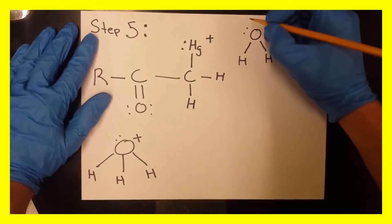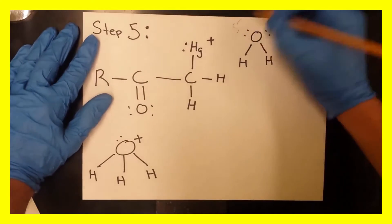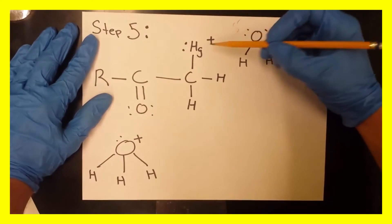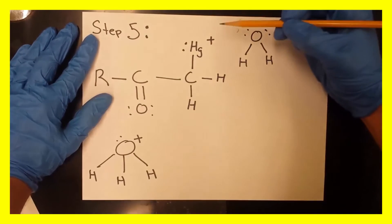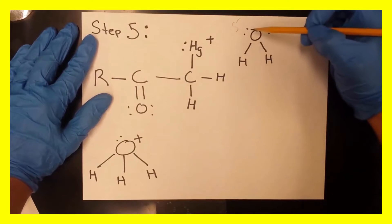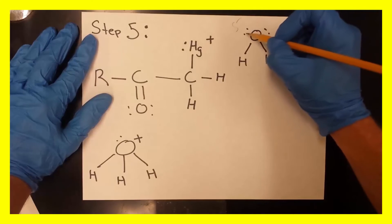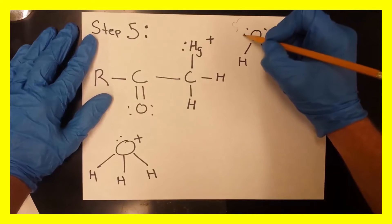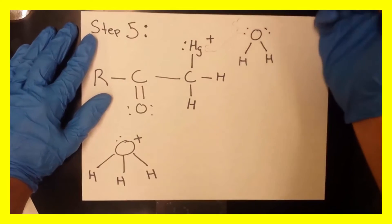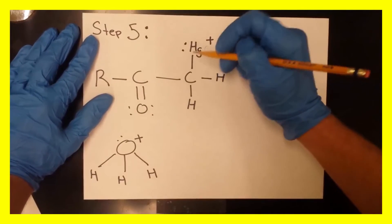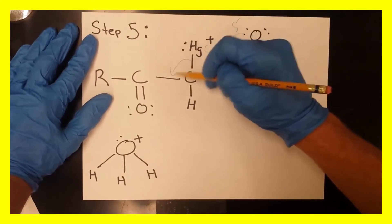And so this oxygen here has a partial negative charge, and this mercury has an obvious positive charge. So what's going to happen here is this lone pair is going to help facilitate the removal of this mercury ion here, and it's going to form this double bond.